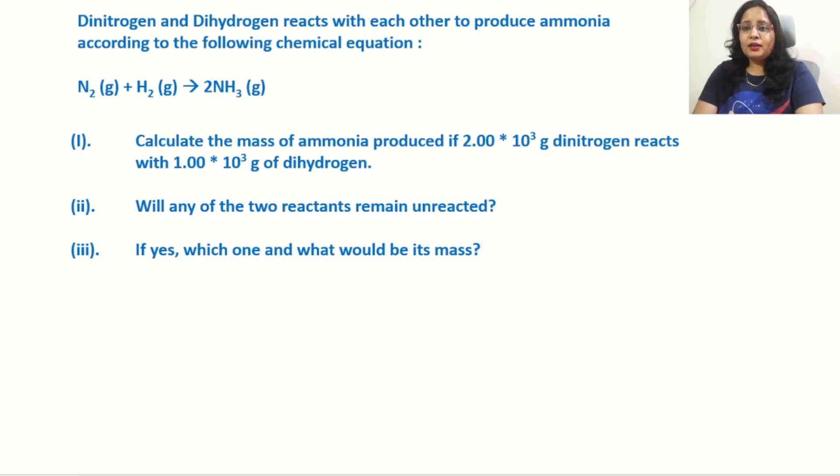The numerical problem states: Dinitrogen and dihydrogen react with each other to produce ammonia according to the chemical equation N₂ + H₂ → NH₃. The question has three parts. First, calculate the mass of ammonia produced if 2.0 × 10³ grams of dinitrogen reacts with 1.0 × 10³ grams of dihydrogen. Second, will any of the reactants remain unreacted? Third, if yes, which one and what would be its mass?